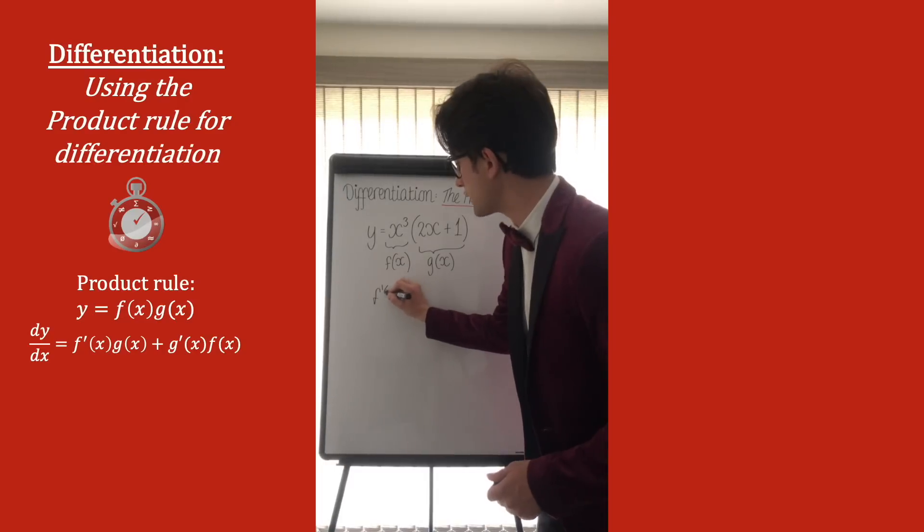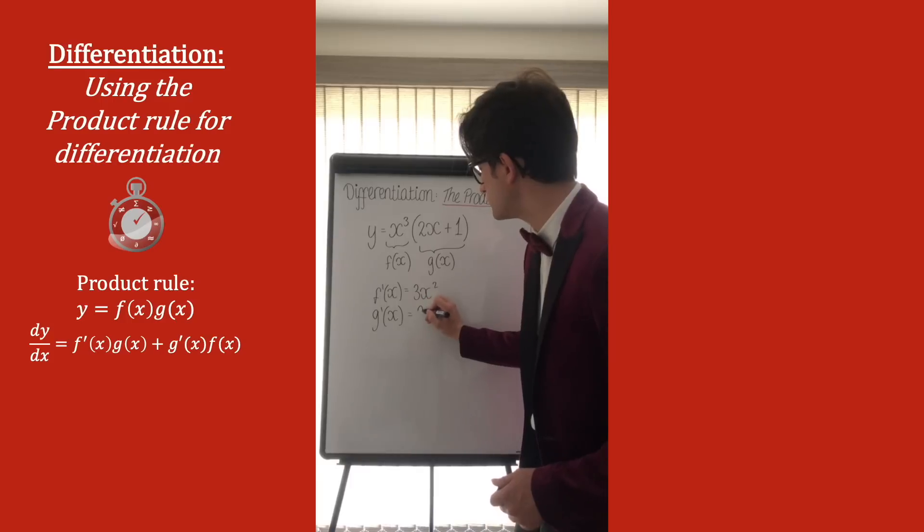So let's just make a note, f dash x will be equal to 3x squared, g dash x, the derivative of g, is equal to 2.